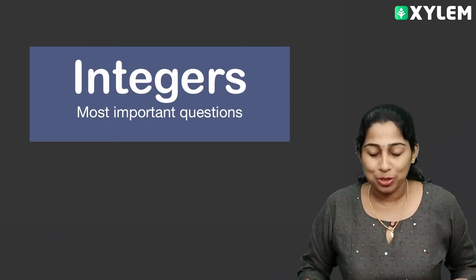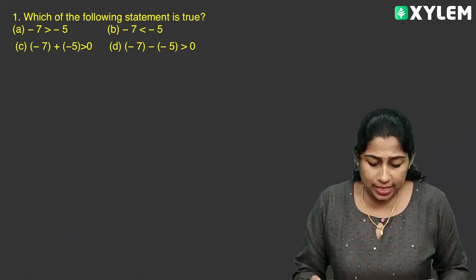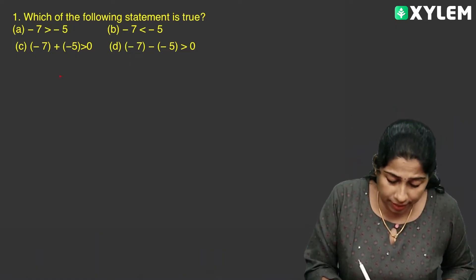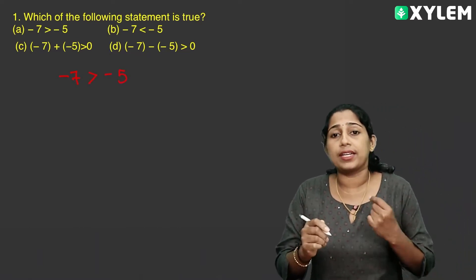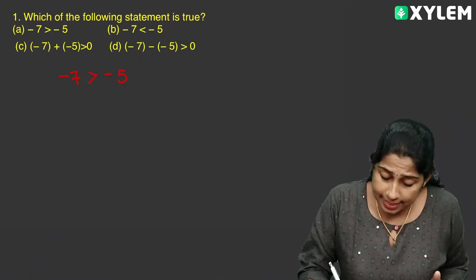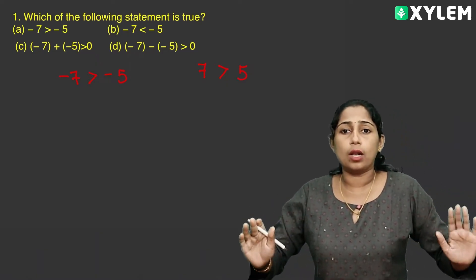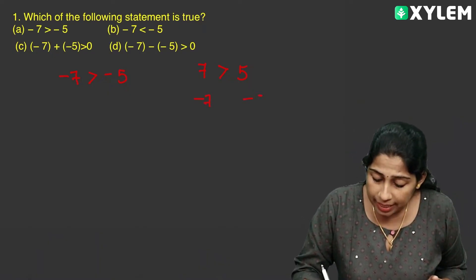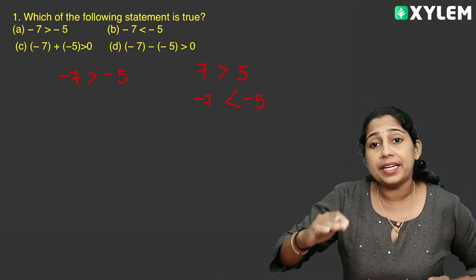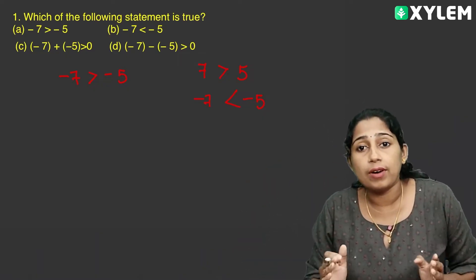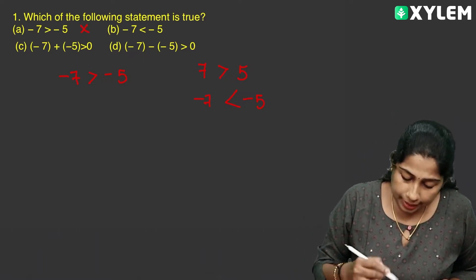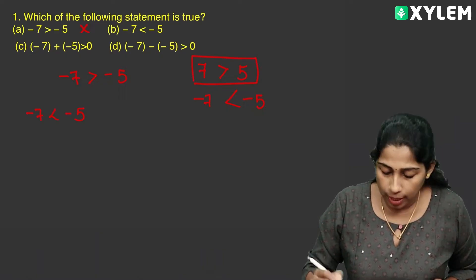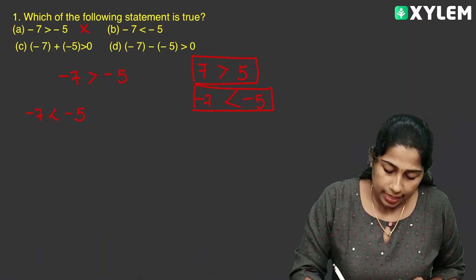The first question is: which of the following statements is true? First option: minus 7 is greater than minus 5. Is that true? Well, 7 is greater than 5. But minus 7 minus 5 — is minus 7 equal to minus 5? No. Minus 7 is less than minus 5. This is correct, because when 7 is greater than 5, minus 7 is less than minus 5. This statement is true.